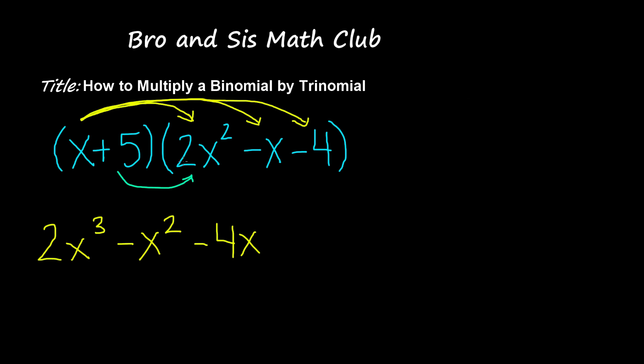So 5 times 2x squared gives us positive 10x squared. 5 times negative x gives us negative 5x. And 5 times negative 4 gives us negative 20.